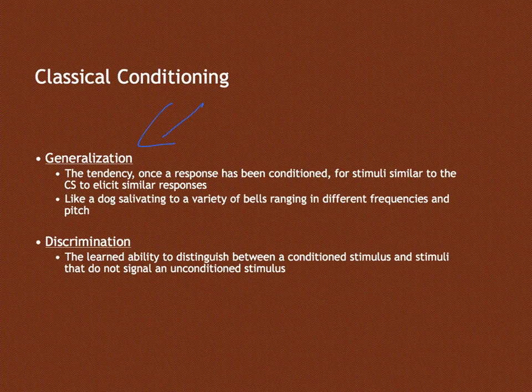Now, what do we call it if the dog can tell the difference between the whistle and the bell in the classroom? If the dog salivates to the whistle but not to the bell, then the dog has discriminated — it has developed the ability to distinguish between a conditioned stimulus and a stimulus that does not signal the unconditioned stimulus.